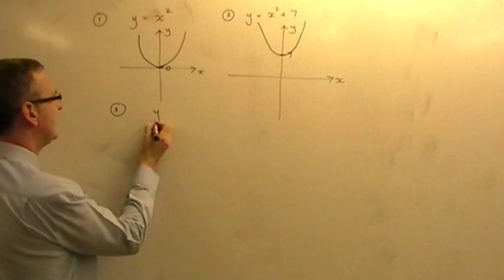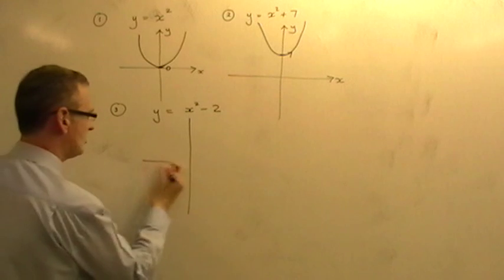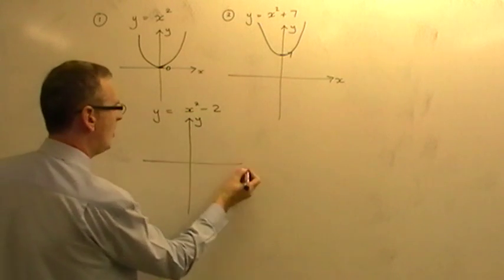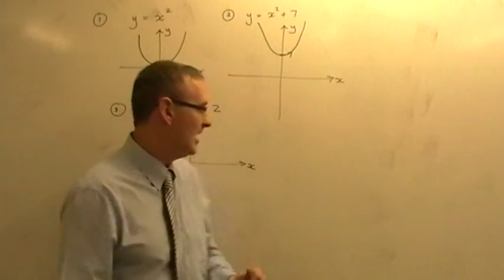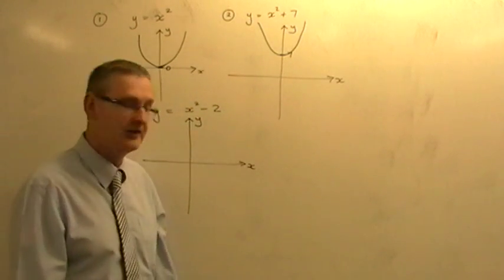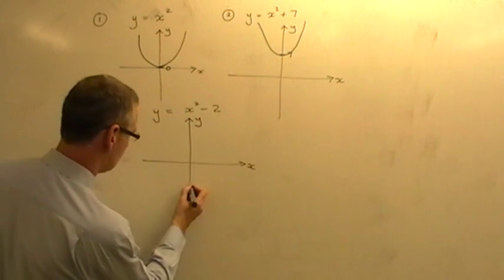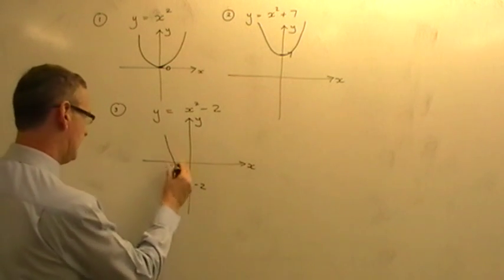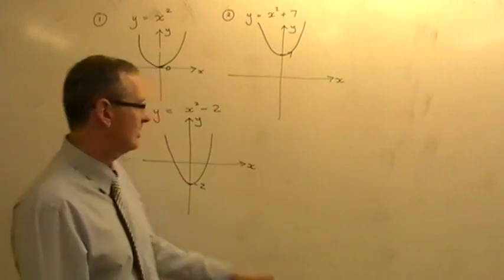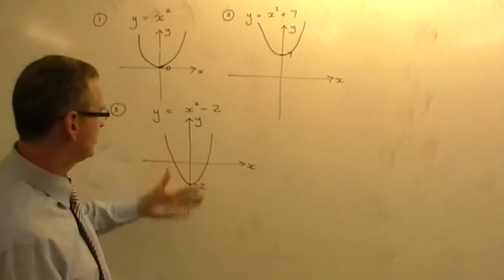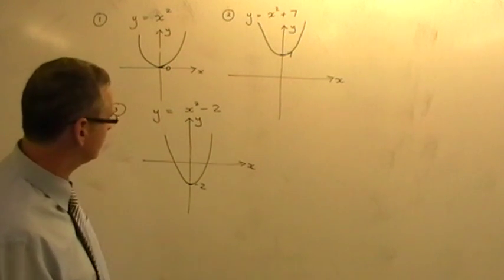Number three: y equals x squared minus two. It's an x squared graph, that u-shape, and a minus two on the end means the original u-shape is moved two places down. So you go to minus two on the y-axis and draw the basic u-shape in that position. The u-shape should be identical in shape to the original. That is the sketch for y equals x squared minus two.